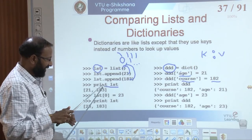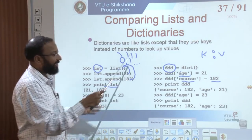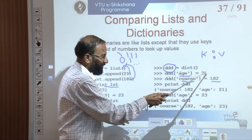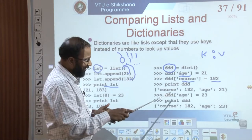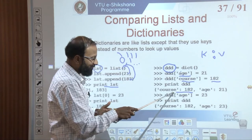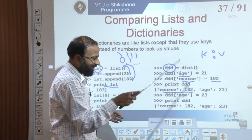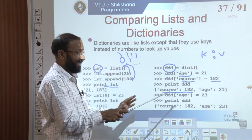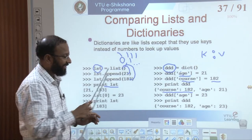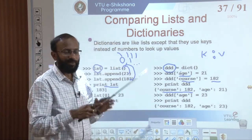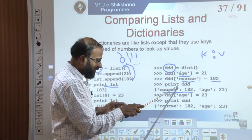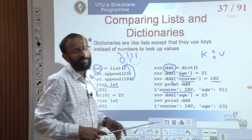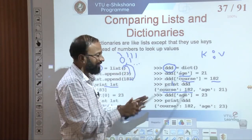When we print the list, we see square brackets with values 21 and 183. When we print the dictionary, the first element we updated was 'age' with value 21, and the second was 'course' with value 182. But the output shows 'course' first and 'age' second. This indicates that in a list, ordering is maintained, but in a dictionary, the elements will not maintain any order. The ordering does not matter at all in a dictionary.